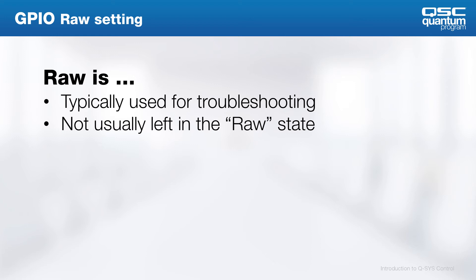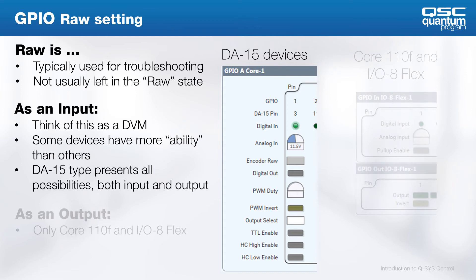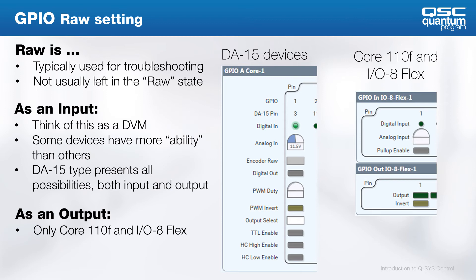Now let's look at that raw configuration mentioned earlier. For troubleshooting GPIO connections, you can temporarily configure the pin in this raw state to expose more controls and information. As an input, you can check the present voltage and enable TTL high current. In this mode, the DA15 connector provides the most possibilities to configure the pins as inputs and outputs, or enable the pulldown internally. Keep in mind that the Core 110F and the IO8 Flex have dedicated inputs and outputs, but all other controls are still available. You can use this raw mode to better understand the signal level and whether it fits the behavior and limits of your GPIO configuration.